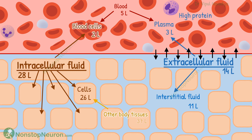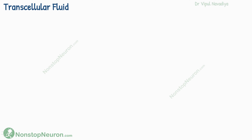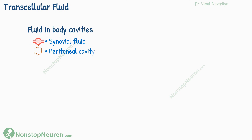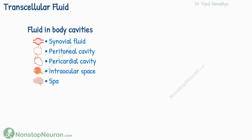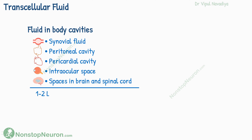One more point before the summary: apart from the fluid in tissues, we also have fluid in body cavities such as the synovial cavity, peritoneal cavity, pericardial cavity, intraocular space, and the space in the brain and spinal cord. The fluid in these spaces is called transcellular fluid. Its composition may differ from plasma and interstitial fluid, and collectively it constitutes about 1 to 2 liters.